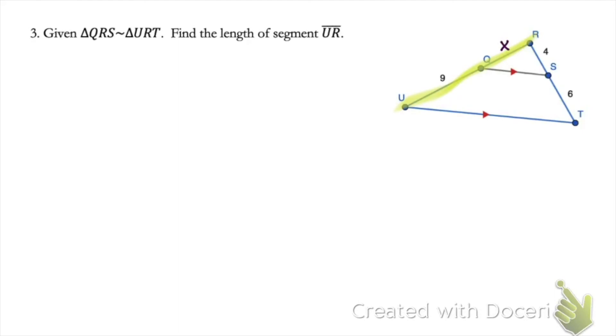Okay, let's start by setting up a proportion here. Let's start with side QR, which is X. And we're going to put that over the corresponding side here, which is the entire side of UR. The length of UR is what we're trying to find. But for now, we can just call it X plus nine.